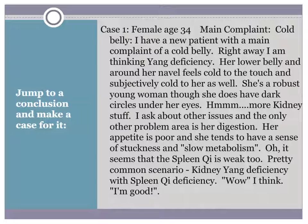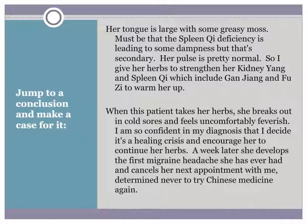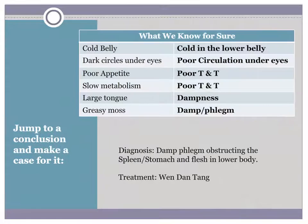Take a moment and see if you can write down where this person jumped to conclusions that might not be true. This patient's tongue is large with some greasy moss — it must be that the spleen qi deficiency is leading to some dampness, but that's secondary. She's thinking the spleen qi deficiency comes first and the dampness is a branch. Her pulse is pretty normal. So she gives herbs to strengthen kidney yang and spleen qi, including gan jiang and fu zi, to warm her up. When the patient takes her herbs, she breaks out in cold sores and feels uncomfortably feverish. So confident in the diagnosis, the practitioner decides it's a healing crisis and encourages her to continue. A week later, she develops the first migraine she's ever had, cancels her next appointment, determined never to try Chinese medicine again.